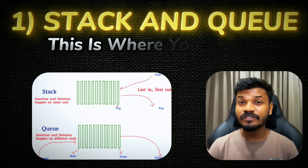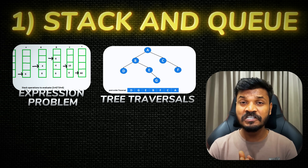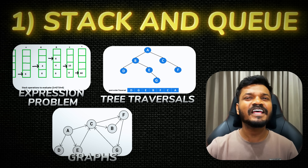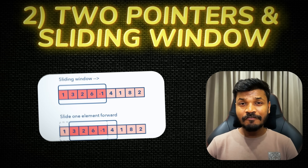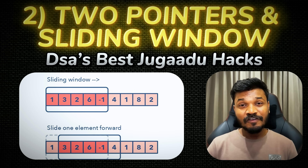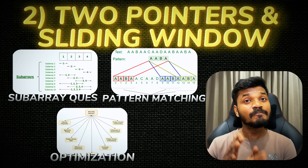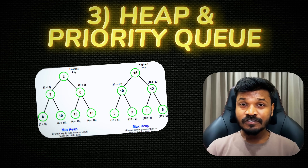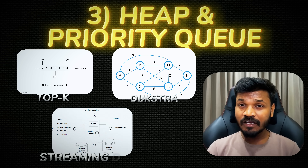Then: Stack and Queues — this is where your code starts feeling logical. Expression problems, tree traversals, even graphs — you'll see them everywhere. Master this and recursion will finally start making sense. Next: Two Pointers and Sliding Window — DSA's best jugaadu hack, perfect for subarray questions, pattern matching and optimization. You'll solve problems in half the time with double the confidence. And Heap and Priority Queue — this is how you manage importance in code: top-K, Dijkstra, streaming data. You'll see this in every greedy style interview question.